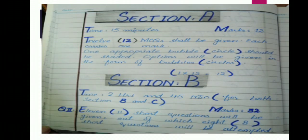Your paper consists of three sections: Section A, Section B, and Section C. Section A is the first section — time is 15 minutes and marks are 12. Twelve MCQs shall be given, each carrying one mark; one appropriate bubble circle should be shaded. For Section B, the time for Sections B and C combined is 2 hours and 45 minutes, and the marks for Section B is 32.